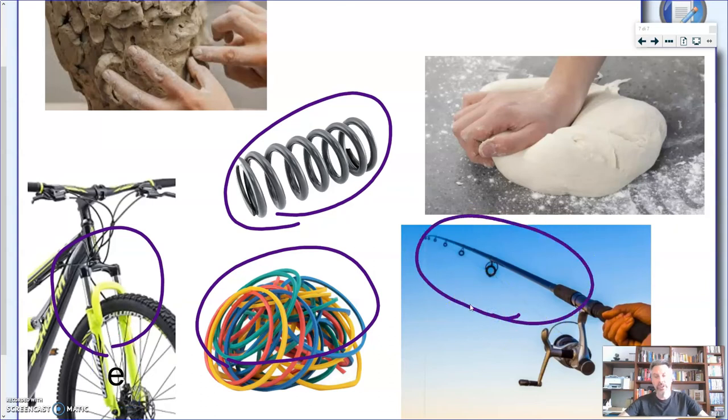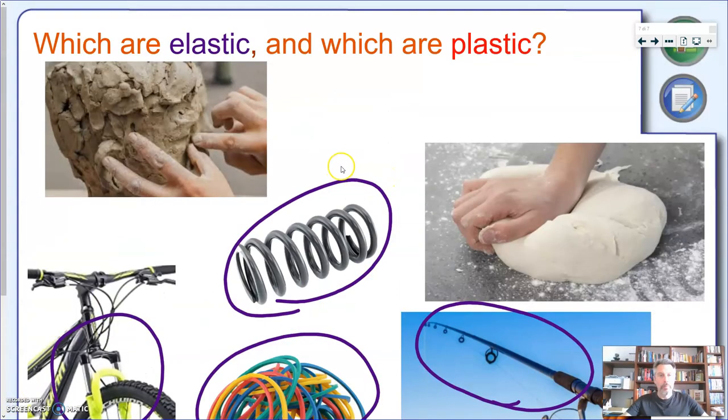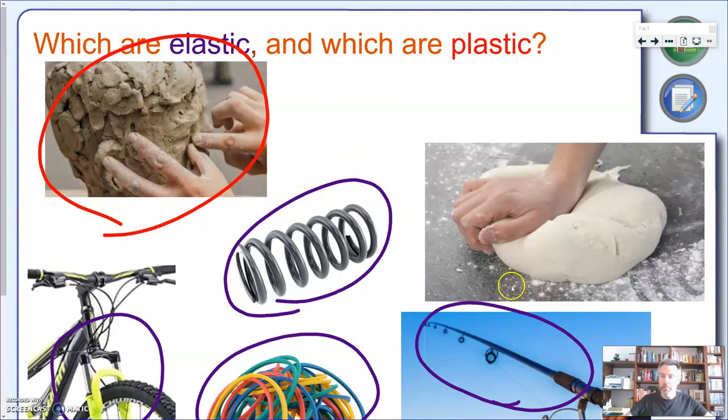Okay the fishing rod is another type of elastic material. By exclusion the other materials in the slide are showing a plastic behavior. We have again clay, we made already clay, so clay is your very typical plastic material but also bread dough. When you're making bread or pizza you need to shape this dough into whatever you want to cook so this is definitely a plastic behavior.